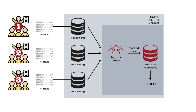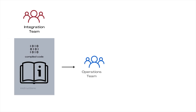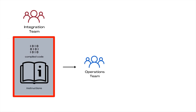The integration team then builds or compiles the code on an available computer that the integration team owns, and then sends the compiled code along with the deployment or installation instructions to the operations team.